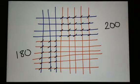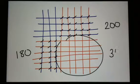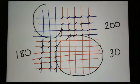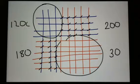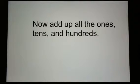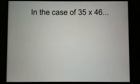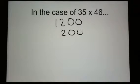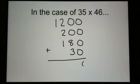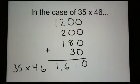So if you remember, I had in this section 30 ones, and in this section I had 12 hundreds, or 1,200. Now I'm just going to add up all the ones, tens, and hundreds I've created. So in the case of 35 times 46, I had 1,200 plus 200 plus 180 plus 30. So if I add it all up, I get 1,610. So the answer to 35 times 46 is 1,610.